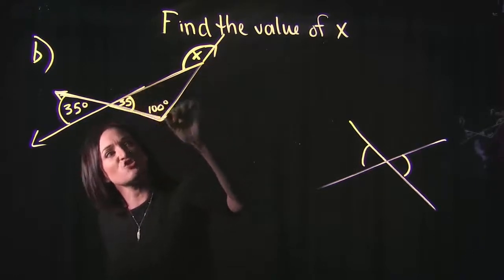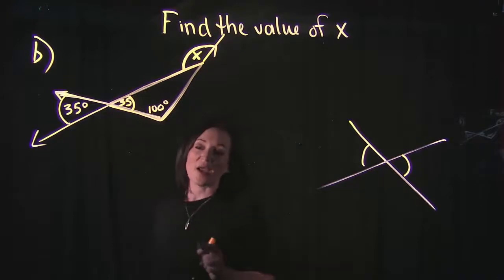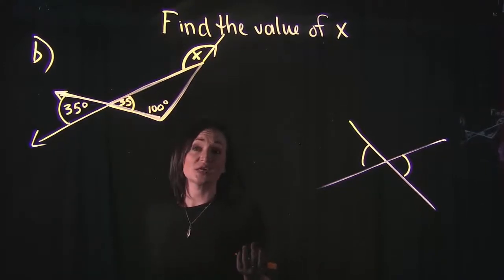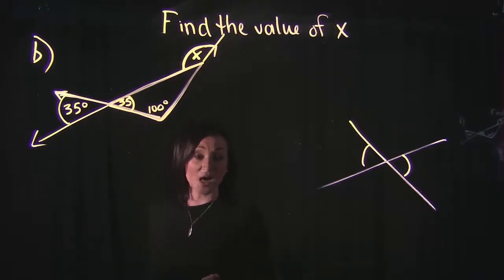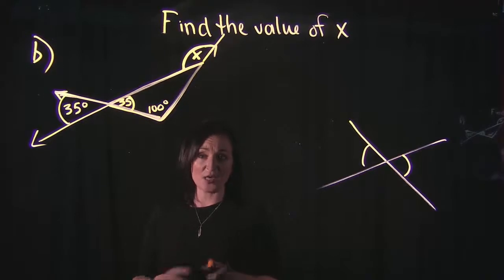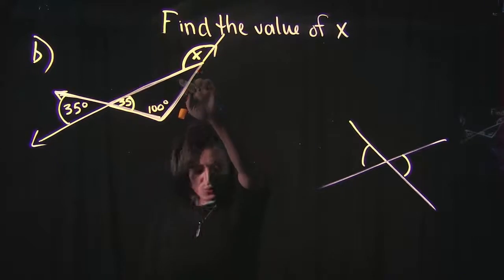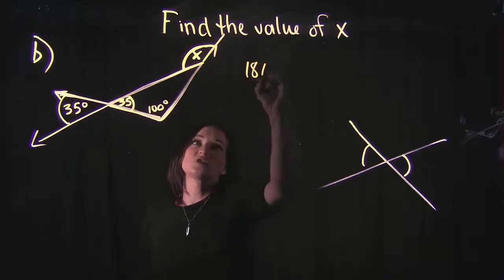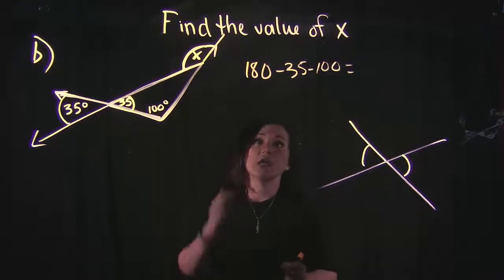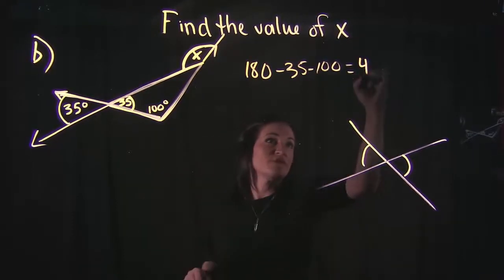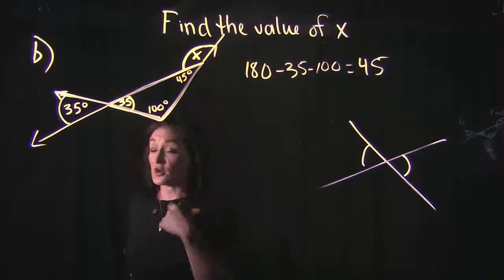I can also see a triangle formed by these lines. Since a triangle's angles sum to 180 degrees, and I know two angles are 35 and 100, I take 180 minus 35 minus 100, which equals 45. So this third angle inside the triangle is 45 degrees.